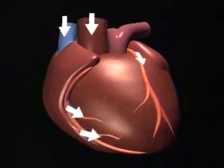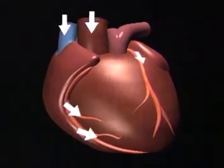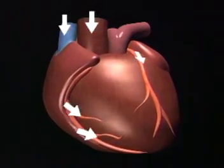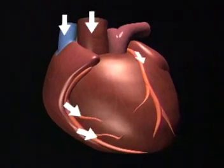Second, because pressure on the lower body vascular bed is released just before contraction, there is an immediate drop in peripheral vascular resistance resulting in decreased afterload. Third, the combined effects of decreased afterload and increased venous return results in increased cardiac output without an increase in cardiac oxygen consumption.